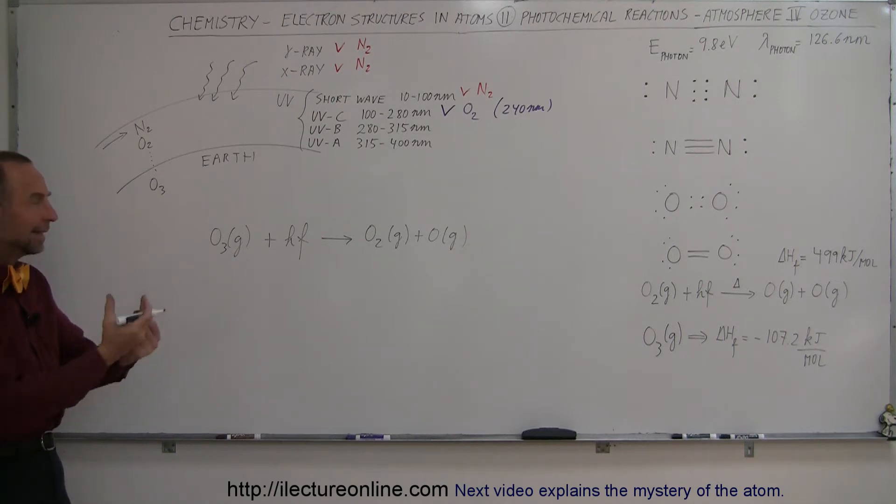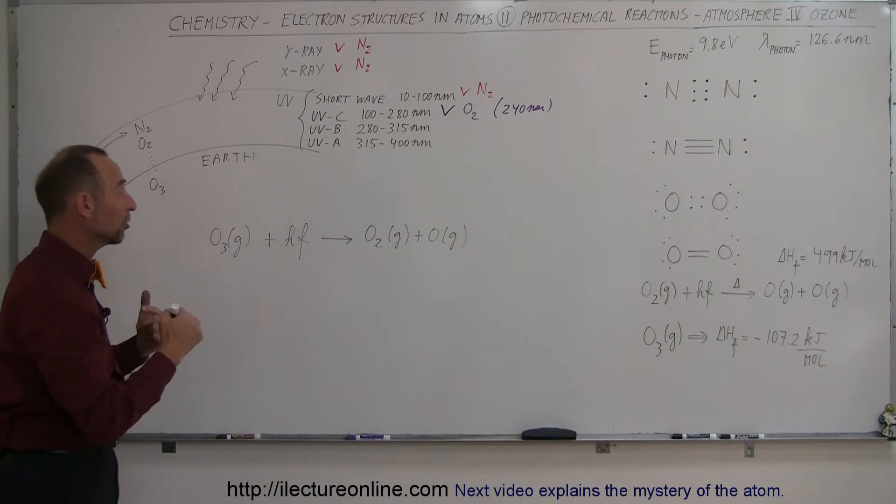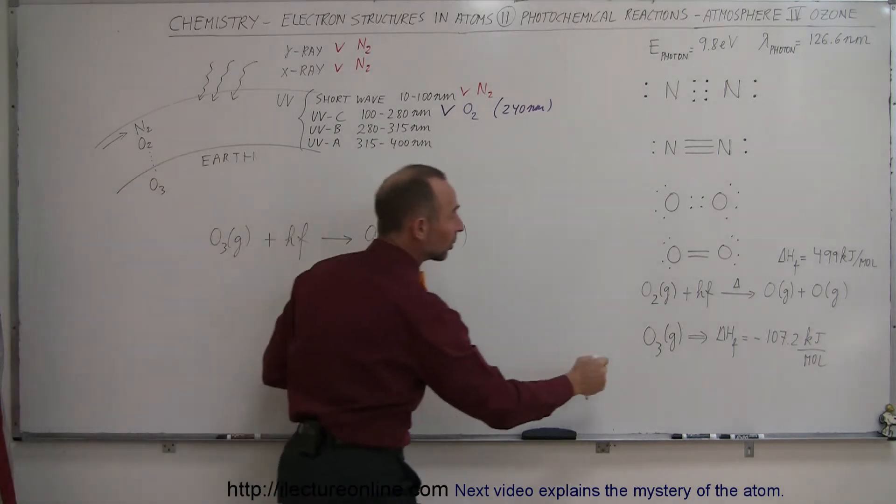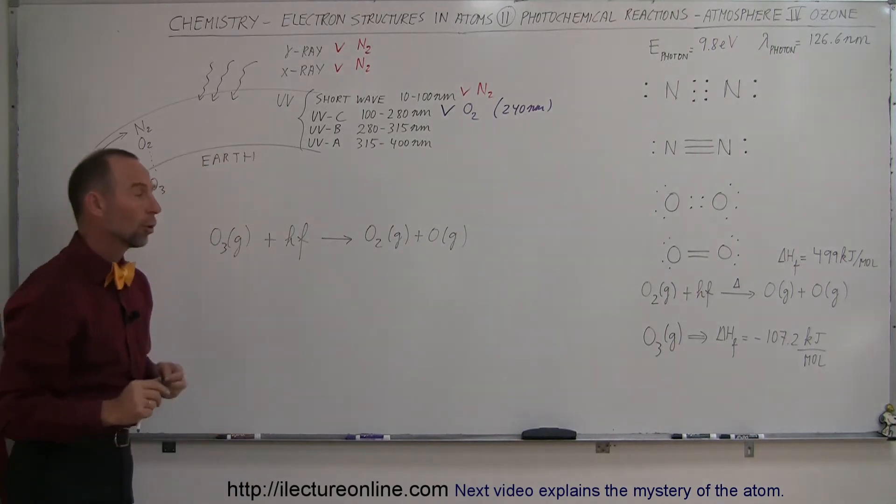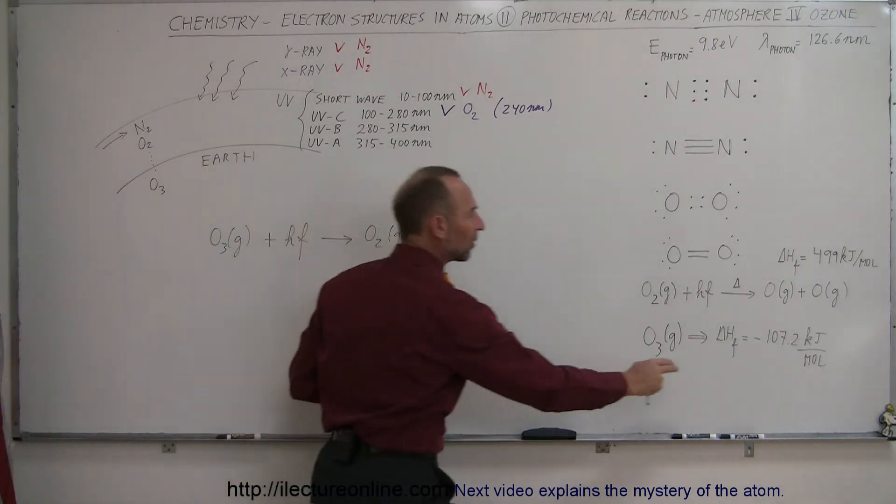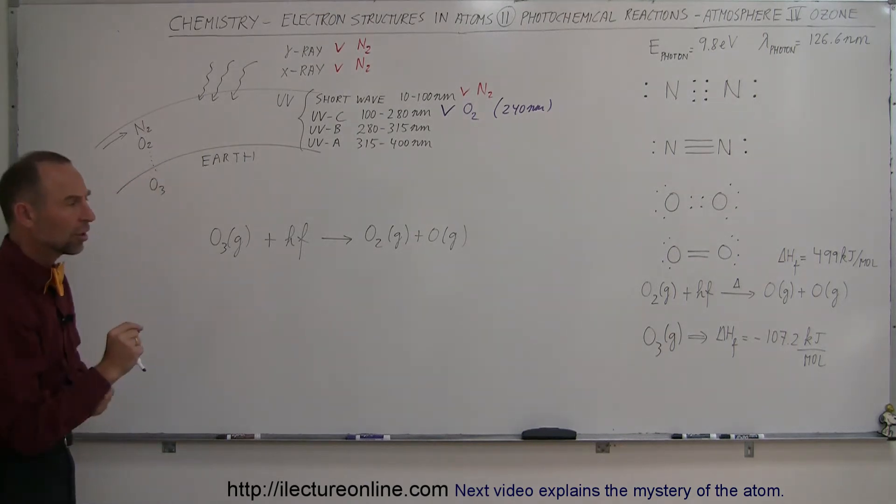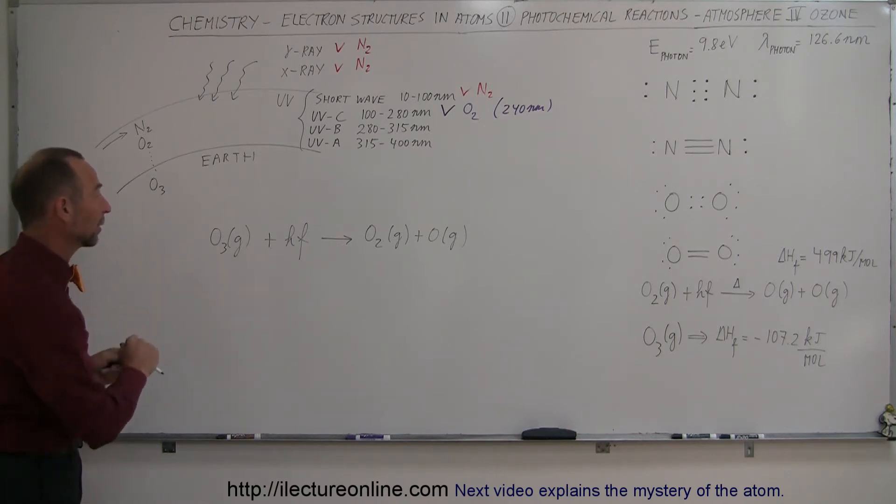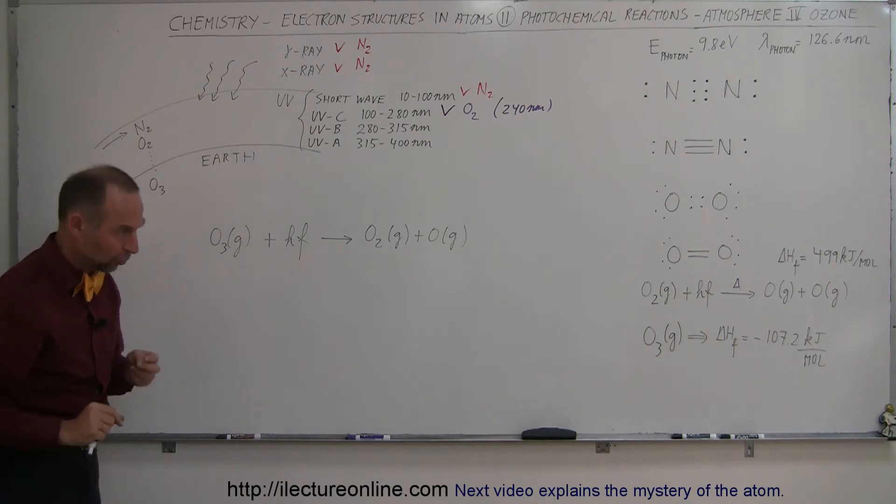This requires an input of energy because it's an endothermic reaction. It requires 107.2 kilojoules per mole for that reaction to take place. Now the question is, how much is that per molecule? That way we can calculate what kind of photon is able to be absorbed by ozone molecules.